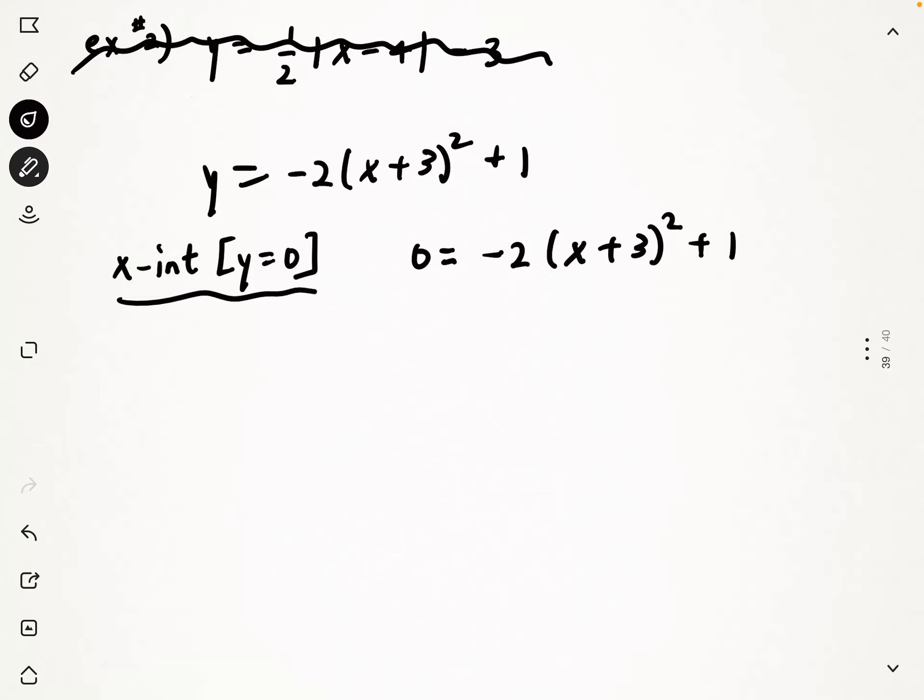And you could do this in two ways. You could multiply out the right side, expand it, use quadratic formula. That could work. I'm going to skip all that and I'm going to just isolate the x. I'm going to bring the positive one over, and then I can divide both sides by negative two.